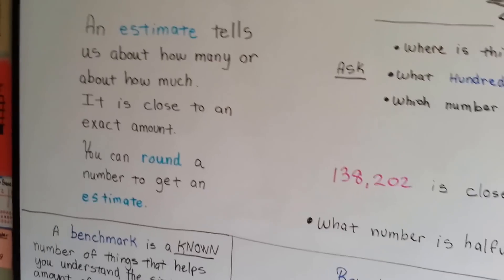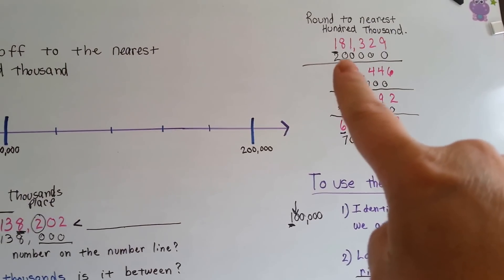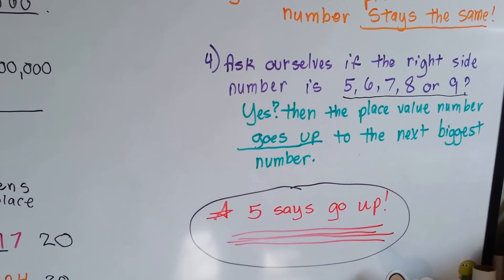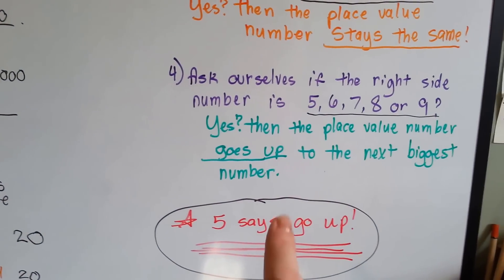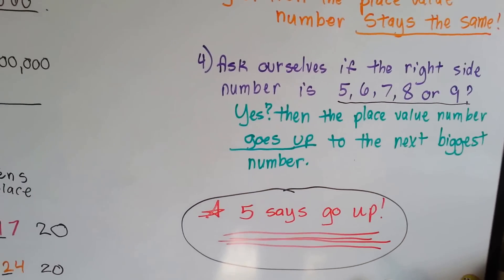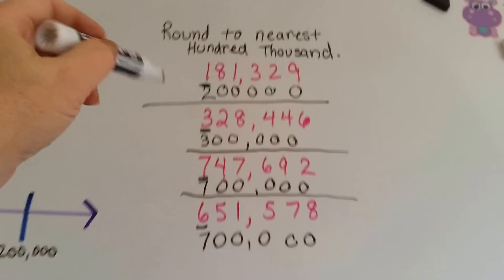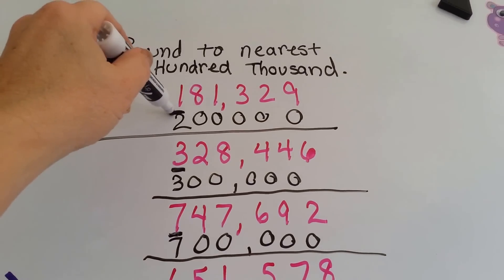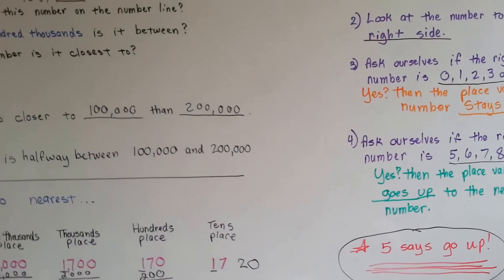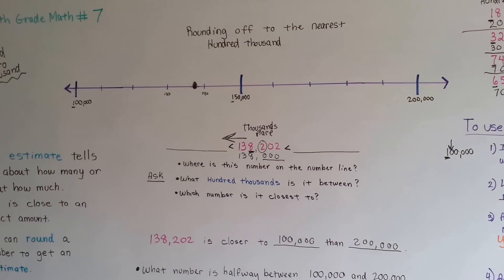So that is rounding numbers and estimating to 100,000. Remember to always identify the place value you're rounding — put a little line underneath it. And remember our red rule: 5 or bigger says to go up. 5, 6, 7, 8, or 9 tells the number to go up. The number to the right is the worker number that always tells the place value what to do. 5, 6, 7, 8, 9 says go up — the rest stay the same. Turn into zeros when they're done with their job. I'll see you next video — keep up the good work. I hope this helped. Bye!